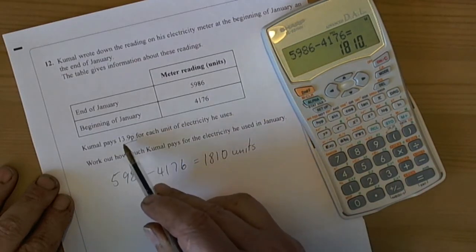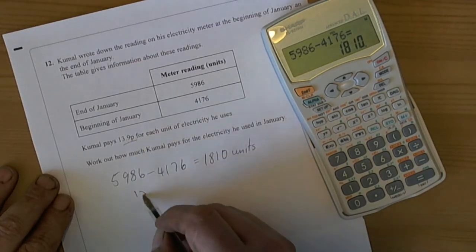It is 13.9p per unit, so we need to do 1,810 times 13.9p per unit.